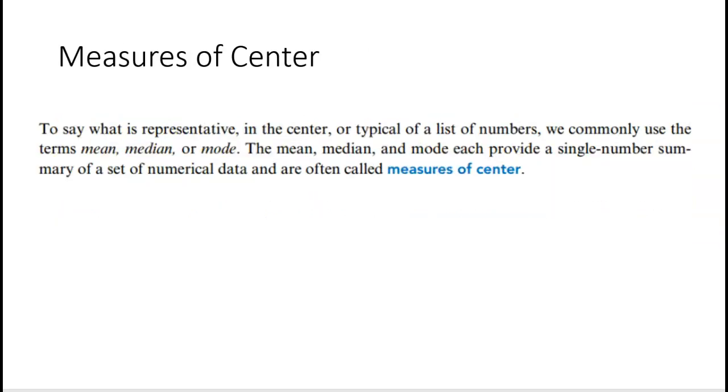So measures of center, to say what is representative or typical, we commonly use mean, median, and mode. And here's the first thing I want to say: please don't teach these with range. Range is not a measure of center. A measure of center is mean, median, and mode. We're looking for what is typical. These provide a single number summary of a whole set of data. We need to be really careful because if we're just looking at one number, that's going to say a lot. We call these measures of the center.